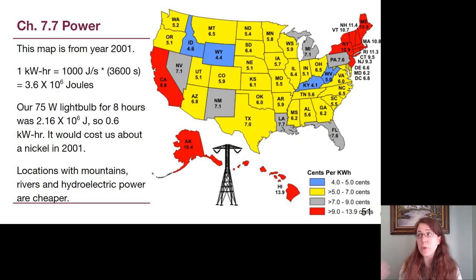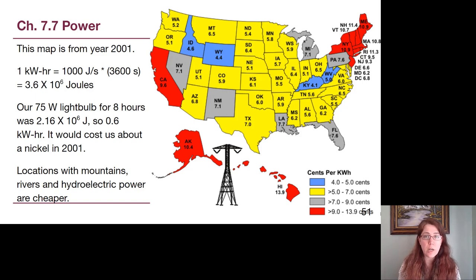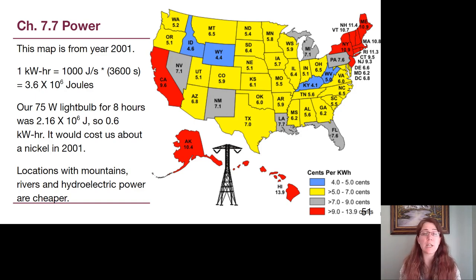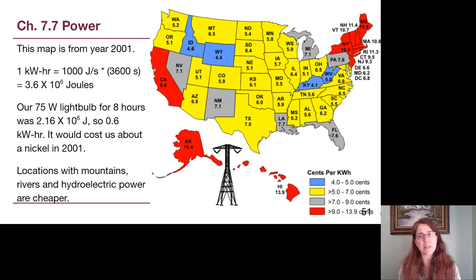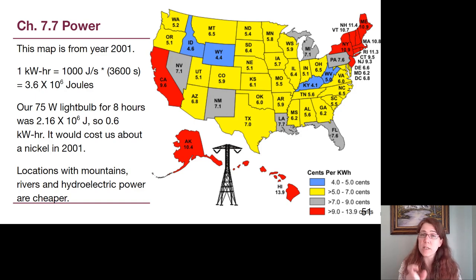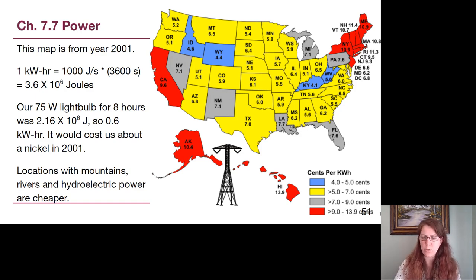The cost of electricity varies by location. This map from about two decades ago shows the cost per kilowatt-hour in different states. Places with mountains, rivers, and hydroelectric dams tend to have cheaper electricity. Here in Michigan we were on the high side. For that 75-watt light bulb on for eight hours, the 0.6 kilowatt-hours used would have cost about a nickel — but every single light bulb in your house, every single day, costs about a nickel.